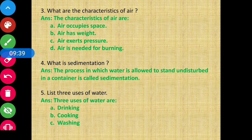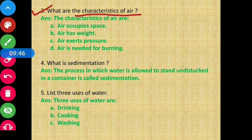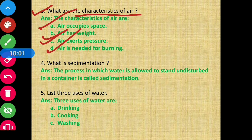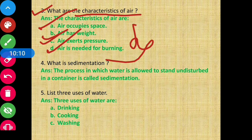Question number 3 — what are the characteristics of air? The first characteristic is that air occupies space. Second, it has weight. Third, air exerts pressure. Fourth, air is needed for burning — without air, no burning can take place. These are the characteristics of air.